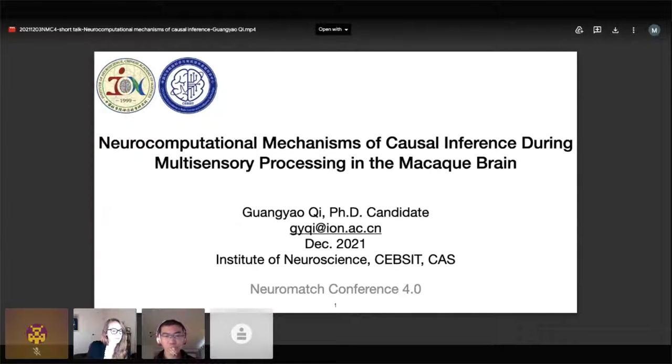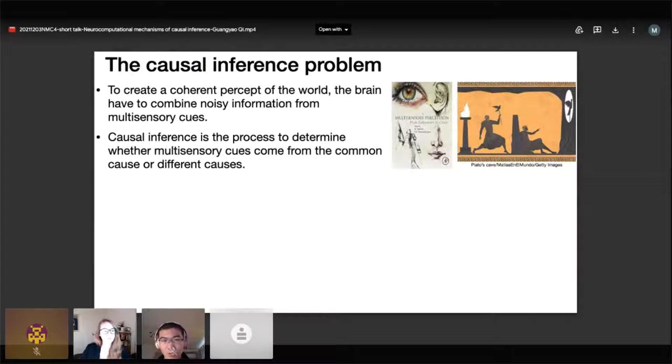Hello everyone, I'm Guangyao Qi. Today I share a story about how the macaque brain solves the causal inference problem during multisensory processing. We are living in a multisensory environment, and to create a coherent perception of the world, the brain has to combine noisy information from multisensory cues.